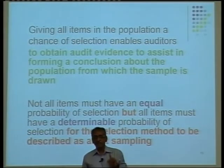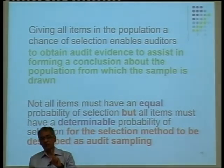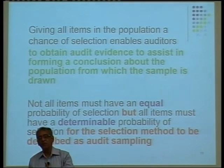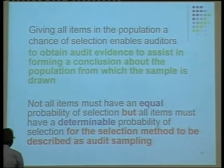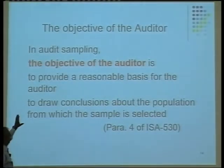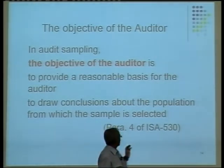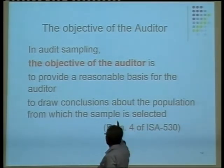Except for statistical sampling, it is not necessary that all items must have an equal chance of selection, but it is essential that all items must have a non-zero probability of selection. That is important — all items must have a chance of being selected, but not necessarily an equal chance. ISA 530, when we have decided to use audit sampling, gives us the objective of providing a reasonable basis for the auditor to draw a conclusion about the population from which the sample is selected.